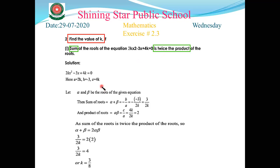Comparing the given equation with the standard form, we get a = 2k, b = -3, c = 4k. Let alpha and beta be the roots. Sum of roots: alpha + beta = -b/a. Putting in b = -3 and a = 2k: minus minus gives plus, so sum = 3/(2k). Product of roots: alpha times beta = c/a = 4k/(2k). Cancelling 4k with 2k gives product = 2.